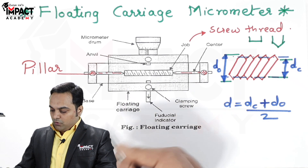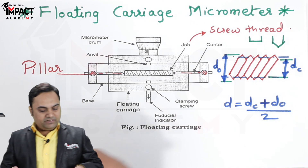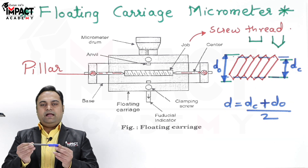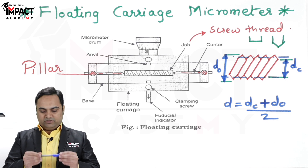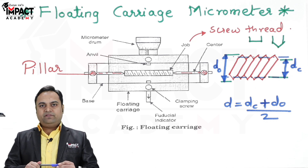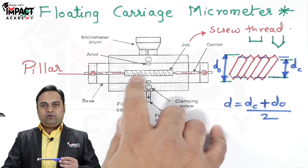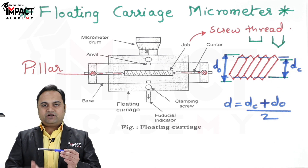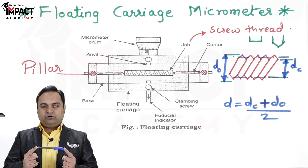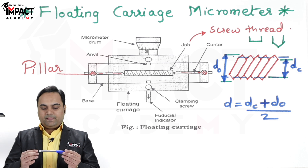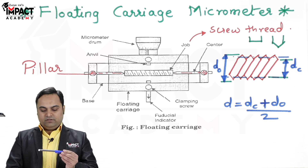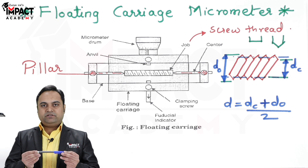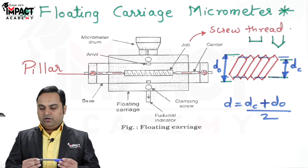Now, why is it called a floating carriage micrometer? The reason is that the screw thread is held between two centers and is not in contact with the ground or the base of the machine. Because it is held between the centers, it is at a distance away from the base — it is not lying on the table. It is held in a floating manner, and that is why it is called the floating carriage micrometer.